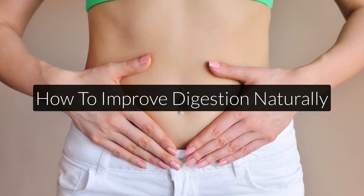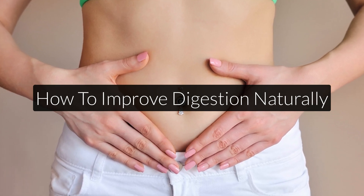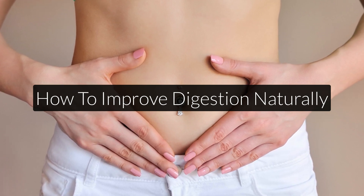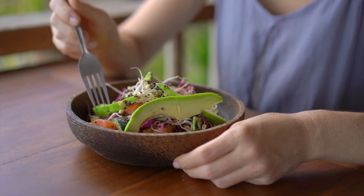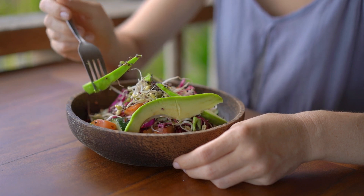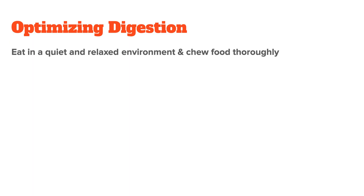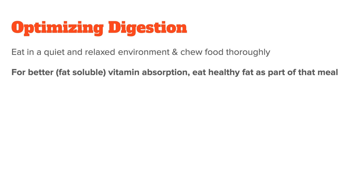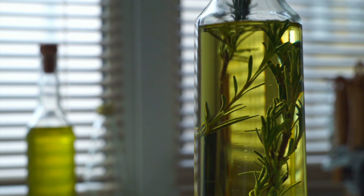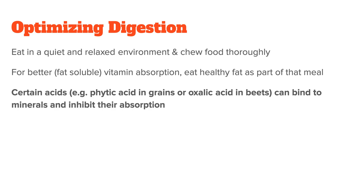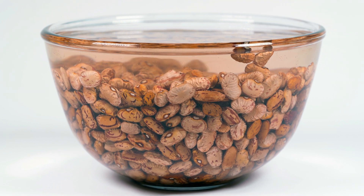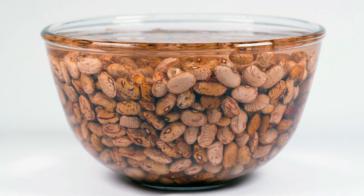The entire process is pretty complex, which is why here are some simple steps to improve your digestion and nutrient uptake. Make sure you eat in a quiet and relaxed environment — this stimulates the parasympathetic nervous system, which is responsible for your rest-and-digest reflex. Also, chew your food thoroughly, as this makes overall digestion easier because you already break down most of the food in your mouth. If you are supplementing fat-soluble vitamins or want to increase your overall vitamin intake, make sure to eat some healthy fats, such as olive oil, as part of that meal. Also keep in mind that certain acids, such as phytic acid in grains or oxalic acid in beans, can bind to minerals and inhibit their absorption. There are ways to minimize this through soaking or sprouting the grains, so make sure to check them out if you follow a grain-heavy diet.